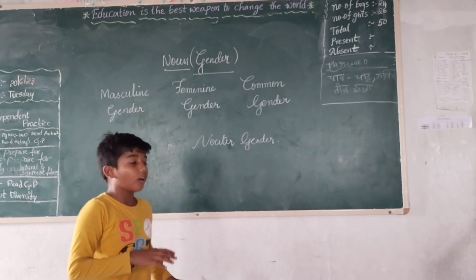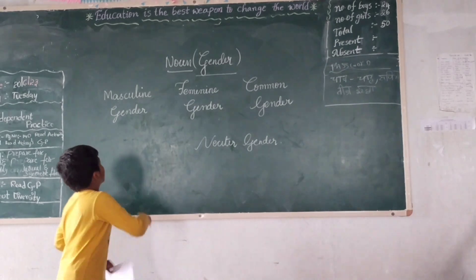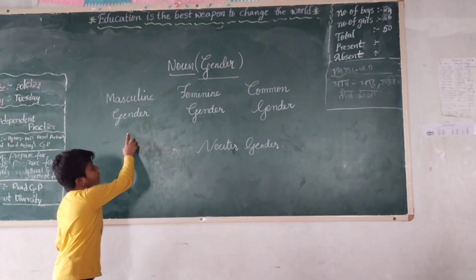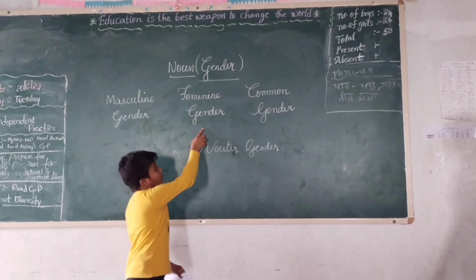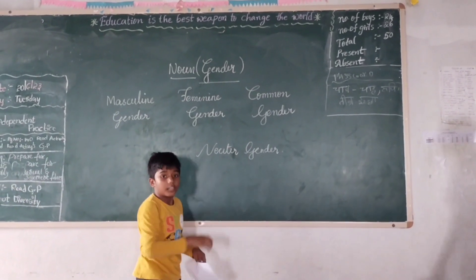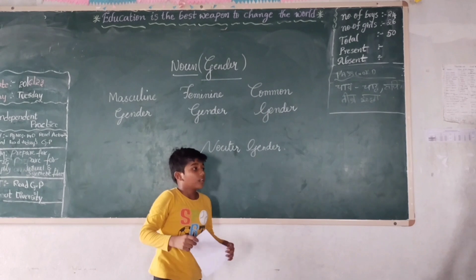There are four types of genders: masculine genders, feminine genders, common genders, and neuter genders.